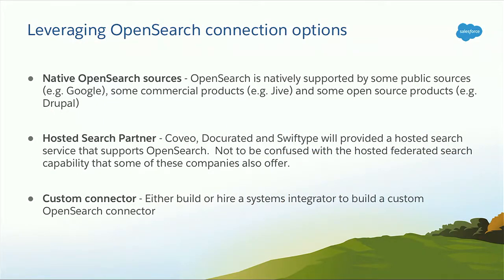We have three options when configuring OpenSearch. First, some sources natively support the OpenSearch protocol — we call directly to those sources. That could be Google or commercial products like Jive. Very simple configuration in Salesforce: you pass the OpenSearch URL and you're connected. The second option is working through one of our certified partners — systems like Coveo, Docurated, and SwiftDive — you configure your OpenSearch connector and talk directly to those systems. The last option: we have a developer toolkit and reference implementation you can use to build your own OpenSearch connector for a custom or in-house system you want to expose in Salesforce.